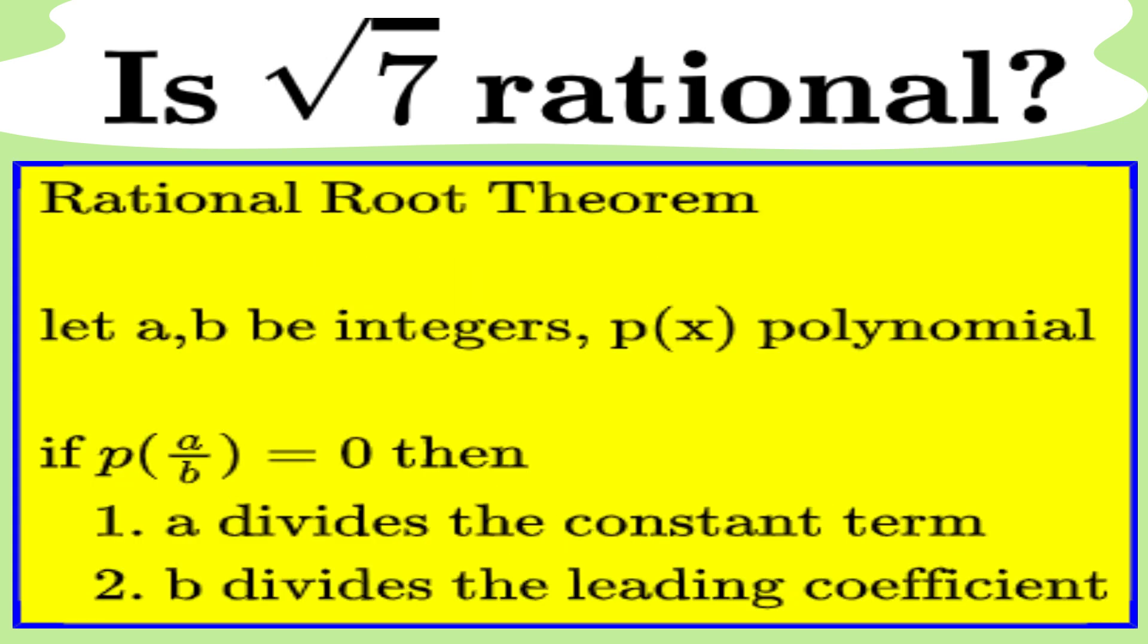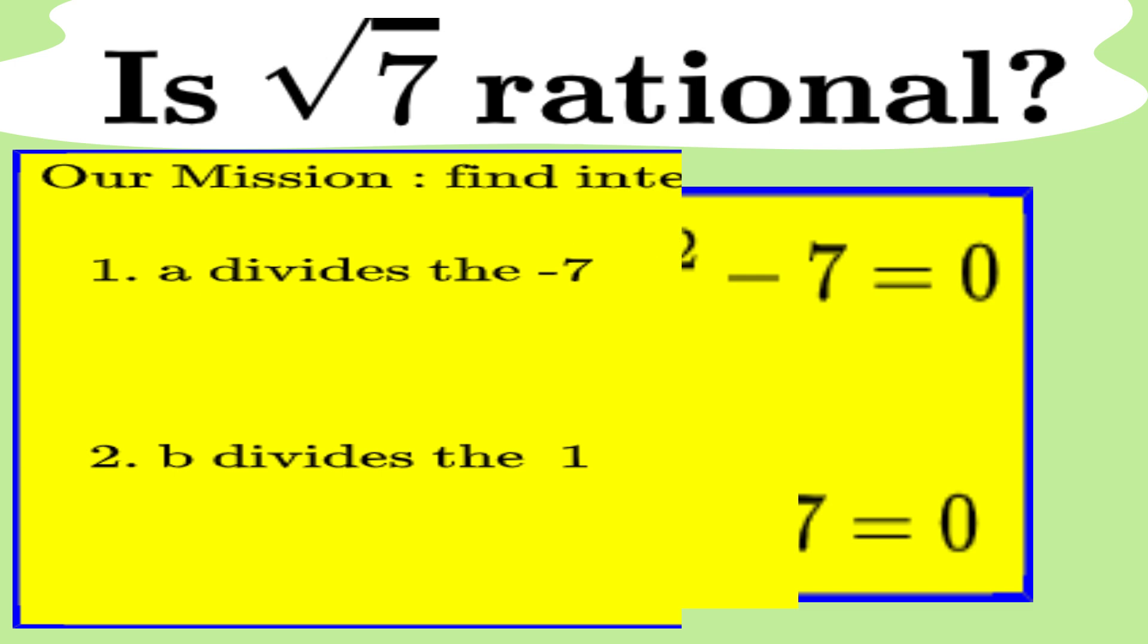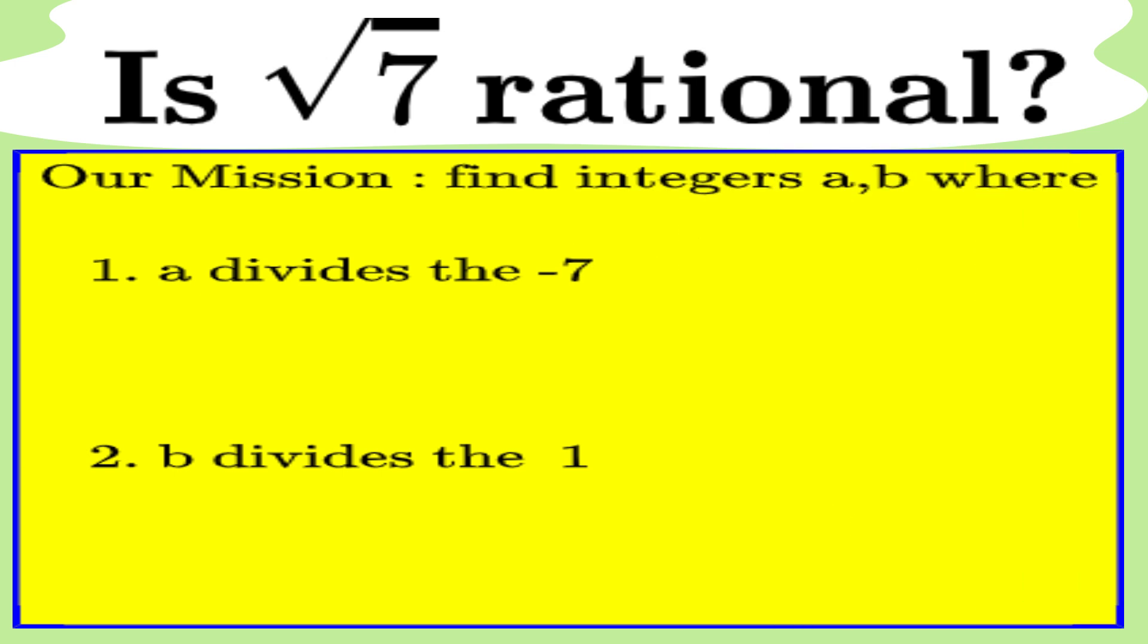Sounds fancy, right? This theorem tells us that if a rational number is a root of a polynomial, it must be expressible as a fraction a over b, where a divides the constant term, in this case, minus 7, and b divides the leading coefficient, which is 1 in this case. So, we're on a mission now. We're looking for a fraction a over b where a divides minus 7, and b divides 1.